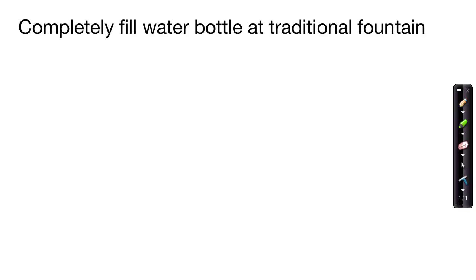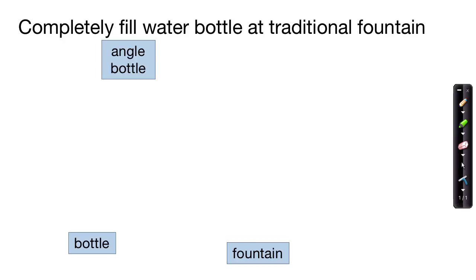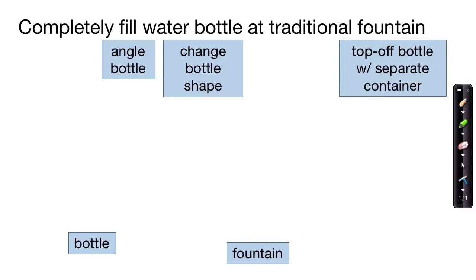We've placed the goal at the top of the diagram. Let's start by listing resources. Of course, we have a bottle and a fountain. Maybe somebody else in the group decides they want to look at sub-goals. One way to achieve the goal might be to angle the bottle or to change the bottle shape. Maybe someone else thinks they could top off the bottle using a separate container filled with water fountain water. Someone might think of changing the bottle shape more specifically — one way might be to cut off the bottle top. We'll make a connection between changing the bottle shape and cutting off the bottle top.